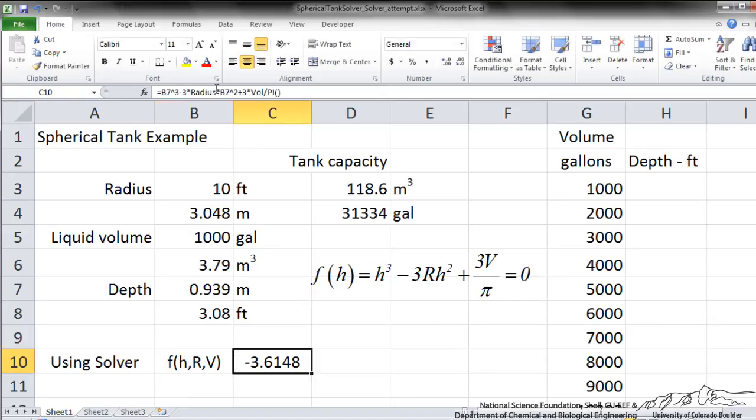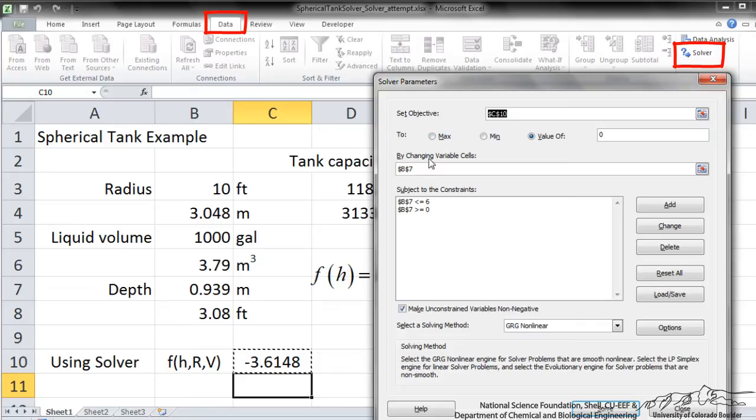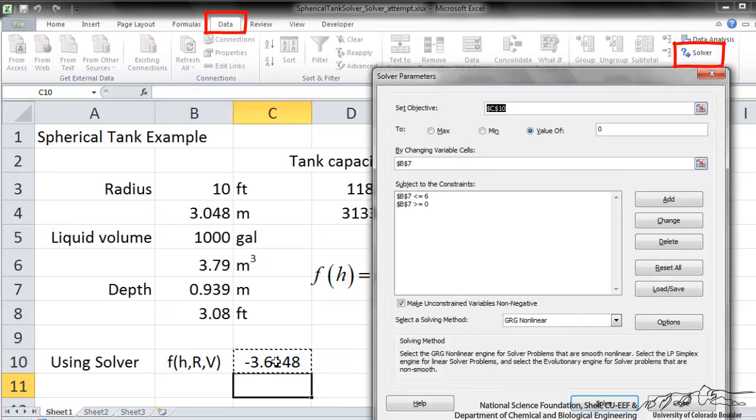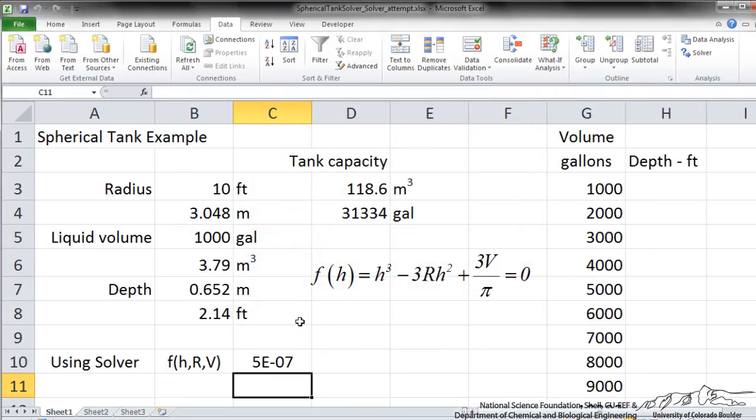So using Solver, I can put in this equation. I've just put in this equation here. I go to Solver. What we're trying to do is set the objective to cell C10. We're trying to set that to a value of zero. When that's met for a particular volume, then we're at the correct depth. We're going to be changing B7. If you want, you can put in some constraints here that the depth has to be greater than zero. I click Solve. Solver returns an answer. Our function is very close to zero.